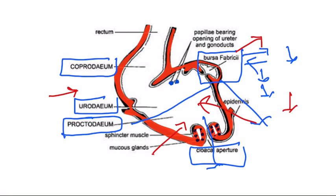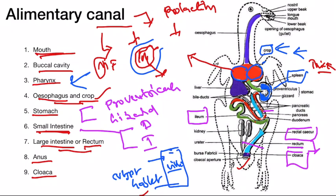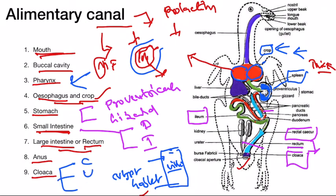In summary, the digestive system comprises: mouth, buccal cavity, pharynx, esophagus and crop, stomach with proventriculus and gizzard, small intestine with duodenum and ileum, then anus opening into cloaca. The cloaca has three parts: coprodium, urodium, and proctodium.